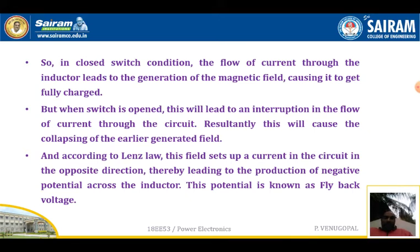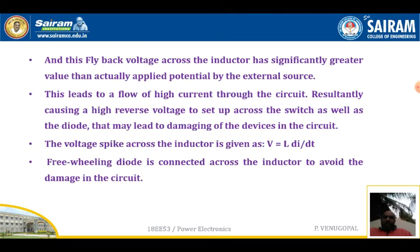According to Lenz's law, the collapsing field sets a current in the circuit in the opposite direction, thereby leading to the production of a negative potential across the inductor. This negative potential developed across the inductor is called the flyback voltage, and this flyback voltage is significantly greater in value than the actually applied potential from the external source.